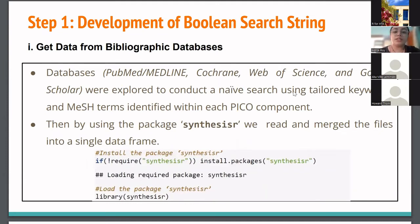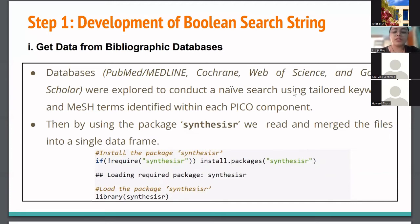For development of the boolean search string, the first thing we did was get data from bibliographic databases. We used four databases: PubMed, Cochrane, Web of Science, and Google Scholar. They were explored to conduct a naive search first using tailored keywords and MeSH terms identified within each of the PICO components. Then the package synthesisr was used to read and merge the files into a single data frame.